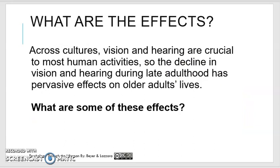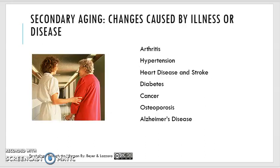Some of these primary aging changes are due to cultural and environmental differences. Secondary aging refers to things connected to aging but not a direct result of it — not everyone faces these problems, whereas primary aging affects everyone. Secondary aging conditions include arthritis, hypertension, type 2 diabetes, cancer — which becomes a higher risk factor with older adults — osteoporosis, and Alzheimer's disease. These are more common in old age, but not everyone will face these challenges.